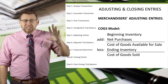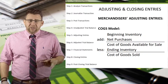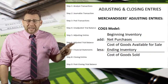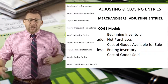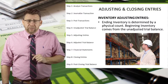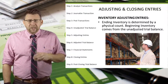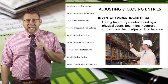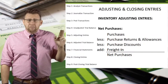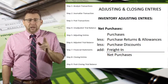The cost of goods sold model is: beginning inventory plus net purchases equals cost of goods available for sale. This represents all the inventory that we could sell. From that we subtract the ending inventory to arrive at cost of goods sold. Ending inventory is determined by a physical count of inventory, done each time ending inventory is adjusted and cost of goods sold is recorded. Beginning inventory is the prior period's ending inventory. Net purchases are calculated by taking purchases minus purchase returns and allowances, minus purchase discounts, plus freight in.